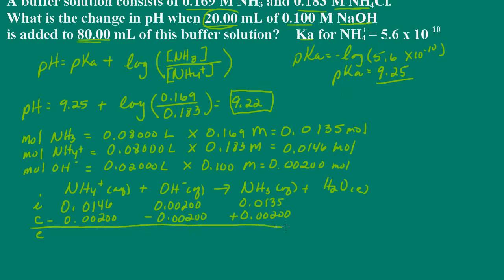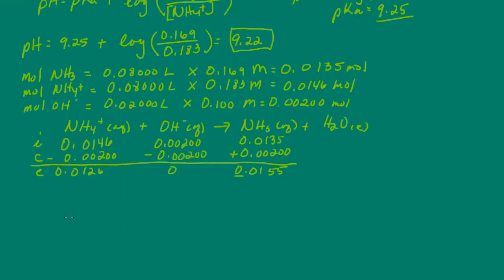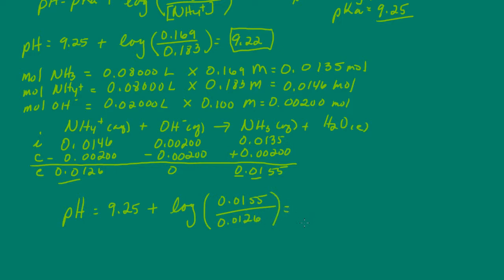At equilibrium, we have 0.0126 moles of ammonium ion, 0 moles of hydroxide ion, and 0.0155 moles of ammonia. Now we have all the information needed to calculate the pH of the solution with the added hydroxide ion. The pH equals the pKa of 9.25 plus the log of the moles of base (0.0155) divided by the moles of ammonium ion (0.0126). Plugging this into the calculator, we get a pH of 9.34.